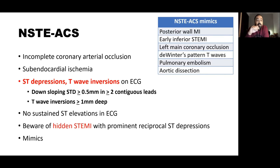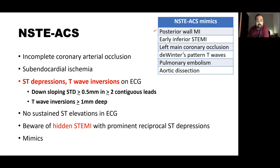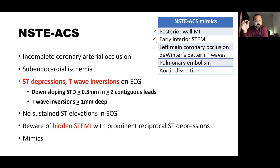Perhaps the most important point when diagnosing non-ST elevation ACS is to beware of hidden STEMIs. Sometimes ST elevations may be hidden or absent, with prominent ST depressions — and you may diagnose NSTEMI when it is actually an occlusion MI. Examples include isolated posterior wall MI, early inferior STEMI with ST depressions in AVL and lead 1 but no elevation yet, and left main coronary artery occlusion where AVR may be the only lead with ST elevation while all other 11 leads show ST depressions — carrying very high mortality risk.